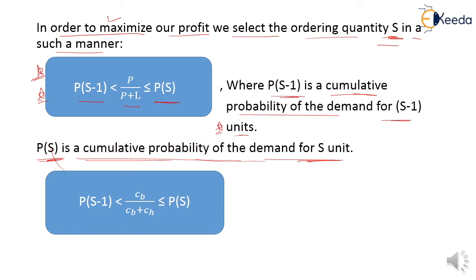The second formula: in order to maximize our profit we select the ordering quantity in such a manner. This formula is also applicable if CB (shortage cost) and CH (holding cost) are given in the question. The formula is: P(S−1) < CB/(CB + CH) ≤ P(S), where P(S−1) is the cumulative probability of demand for S minus 1 units and P(S) is the cumulative probability of S units. Remember this formula.